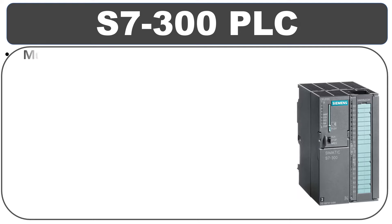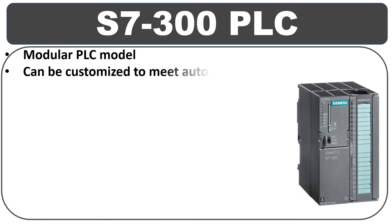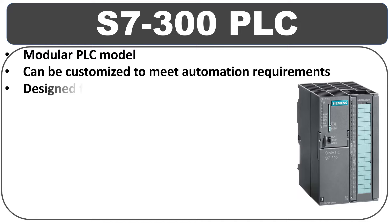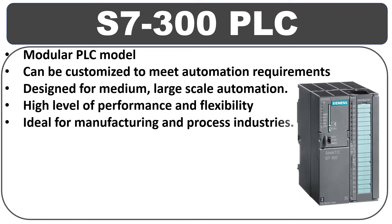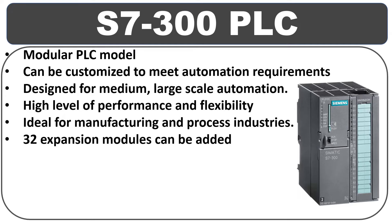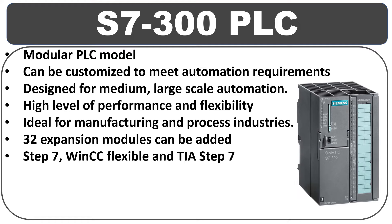Next is the S7-300 PLC. This is a modular PLC which can be customized to meet any specific automation requirement. It is designed for medium to large-scale automation applications and offers high-level performance and flexibility. This PLC is ideal for use in manufacturing and process industries. Up to 32 expansion modules can be added to the S7-300 PLC. The programming software for S7-300 PLCs includes Step 7, WinCC Flexible, and TIA Portal.